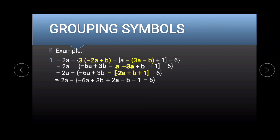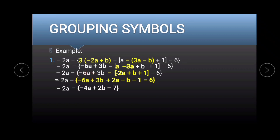Now that we've eliminated the bracket, we eliminate the braces. But first, let's combine the like terms inside the braces. Copy negative 2a, then negative 6a plus 2a gives negative 4a, and 3b minus b gives 2b.